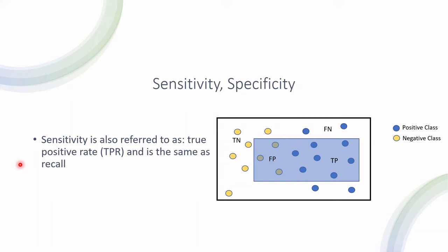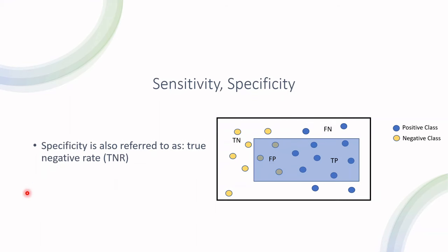So sensitivity, recall, or true positive rate is true positives divided by true positives and false negatives — putting it in words, how well did your model perform regarding the positive class? Specificity, on the other hand, is how well did your model perform regarding the negative class — how many instances were correctly identified as negative?